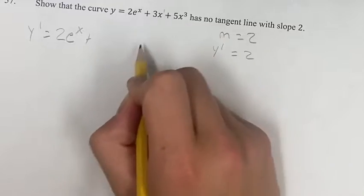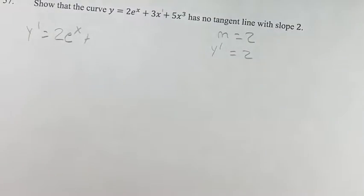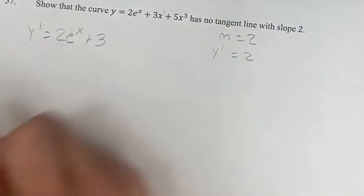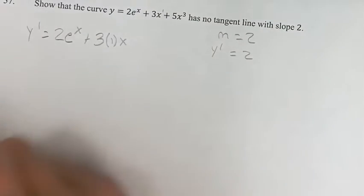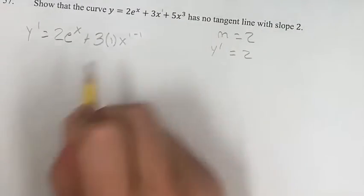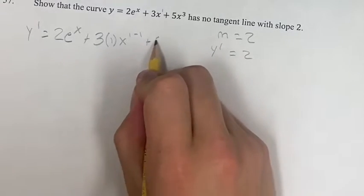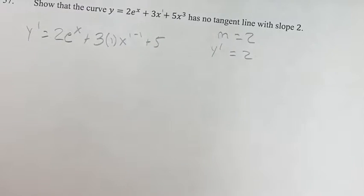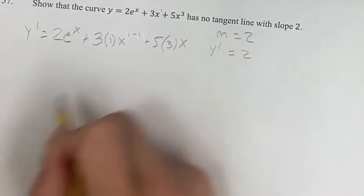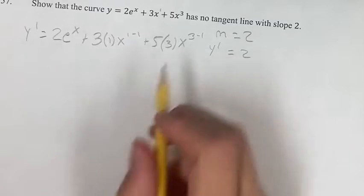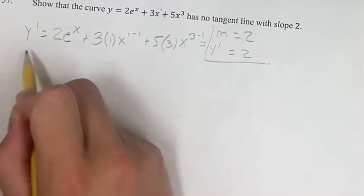Plus, we have two power functions right here if you think of this as x to the first power. So you bring the coefficient out in front, take your exponent and multiply it, and then your new exponent is the old one minus 1. Same thing here - take out your coefficient, multiply it by the exponent, and then take your old exponent and subtract it by 1.